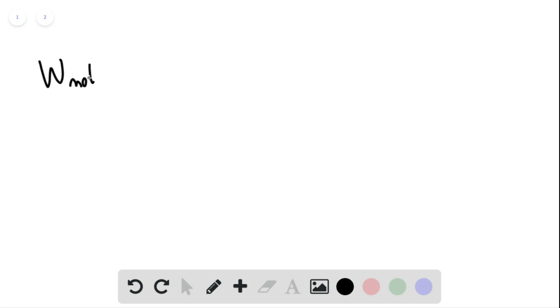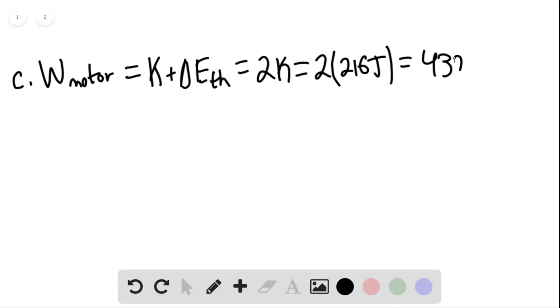provided by the motor for part C would be equal to the kinetic energy plus the change in thermal energy. This would simply be equal to 2 times K, or 2 times 216 joules, which is 432 joules. This would be the work supplied by the motor.